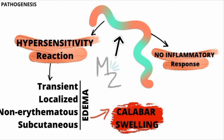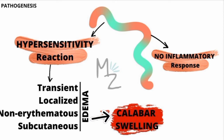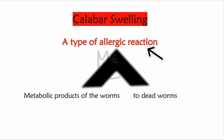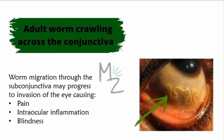In terms of pathogenesis, there is no inflammatory response to microfilariae or adult worms, but a hypersensitivity reaction causes transient, localized, non-erythematous subcutaneous edema, also called Calabar swelling. Calabar swelling is an allergic reaction to metabolic products of the worms or to dead worms. The most dramatic finding is an adult worm crawling across the conjunctiva of the eye — a harmless but disconcerting event. Worm migration through the subconjunctiva can progress to invasion of the eye, causing pain, intraocular inflammation, and blindness.